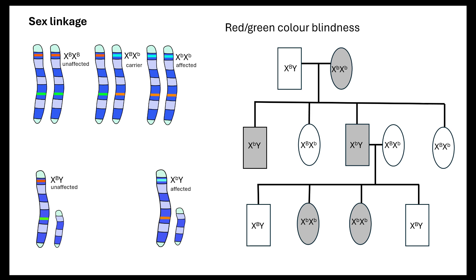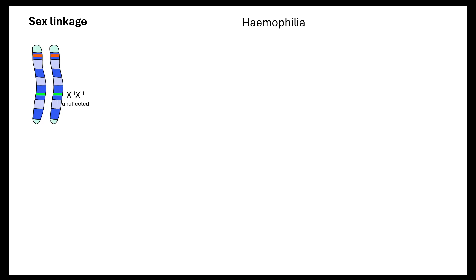When looking at sex linkage with any diagram given, you should be able to determine which alleles have been inherited from which parent. Haemophilia works in the same way — it's a recessive trait. The person with the dominant allele is unaffected; a heterozygous female would be a carrier; a homozygous recessive female would be affected.